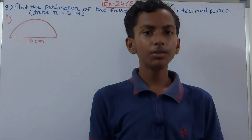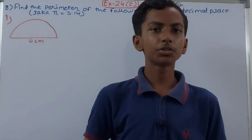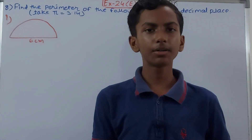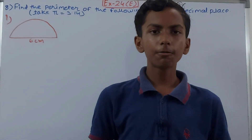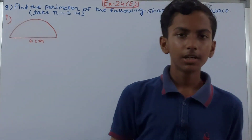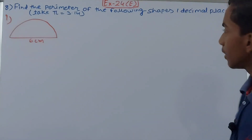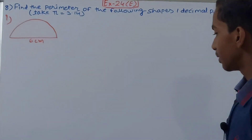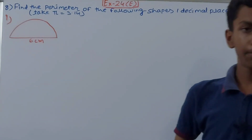Hello friends, welcome back to my YouTube channel 'Unlock Your Learning'. In this video we are going to solve ICC Mathematics Class 7, Chapter 24: Area and Perimeter, Exercise 24E, Question Number 8. We have to find the perimeter of the following shapes up to one decimal place.